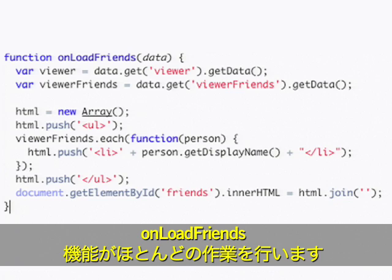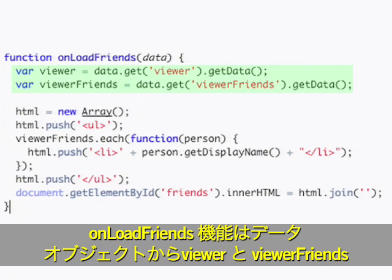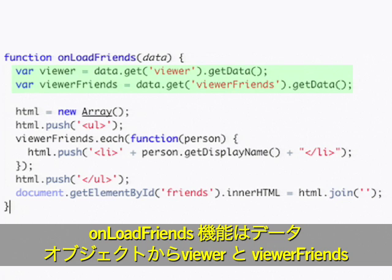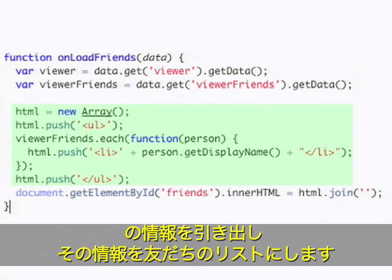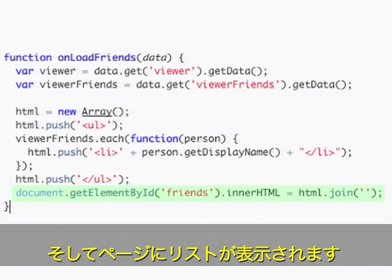The onloadFriends function does most of the work. It pulls out information on the viewer and the viewer friends from the data object, pushes that list of friends into a list, and then displays the list onto the page.